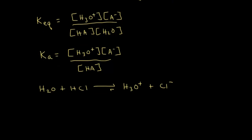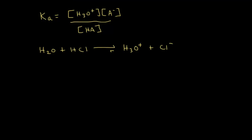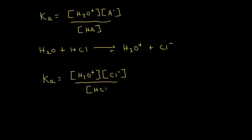So we talked about the equilibrium lying to the right, which means we get way more products than reactants. Let's go ahead and write the Ka expression for this acid-base reaction. Ka is equal to the concentration of the products over the concentration of the reactants, so Ka equals the concentration of H3O+ times Cl minus, all over the concentration of HCl. Since HCl is a strong acid, the equilibrium lies to the right, giving an extremely high concentration of products compared to reactants. The actual number turns out to be approximately 10 to the 7th over 1.